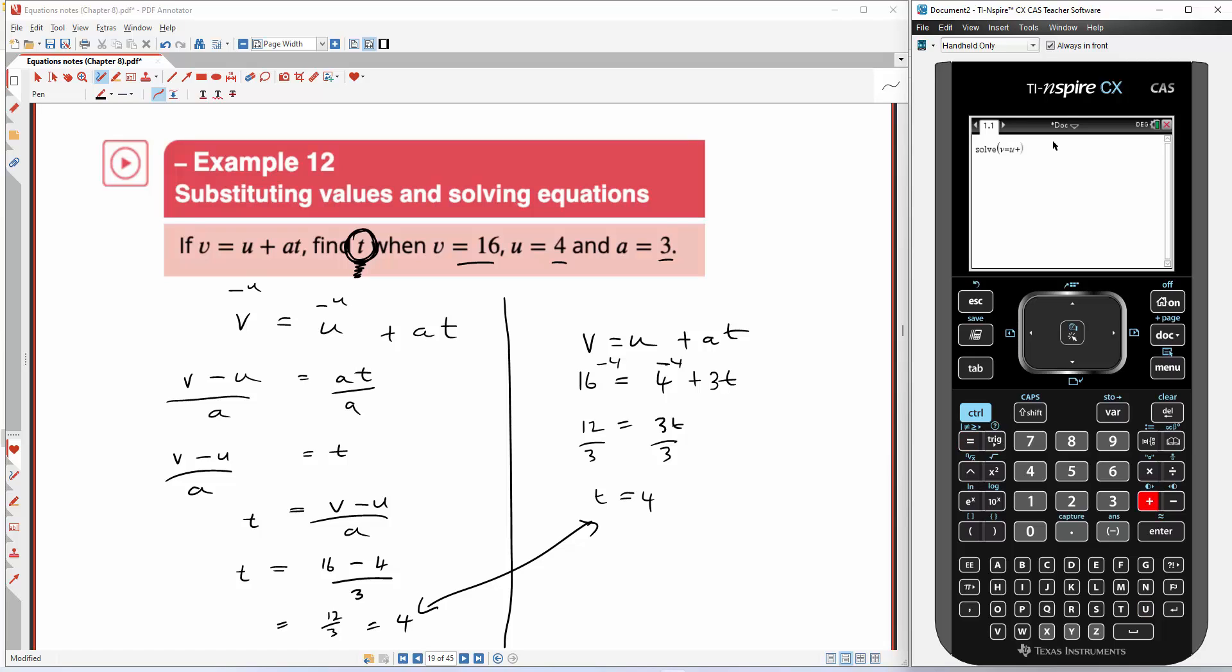Okay, we're going to type in v equals u plus, and this is really important, it's going to be a times t. So you've got to put, when you see two variables together, we've got to put a multiply sign in between them. And what we're going to do is solve that for, or make t the subject. So we hit enter now.